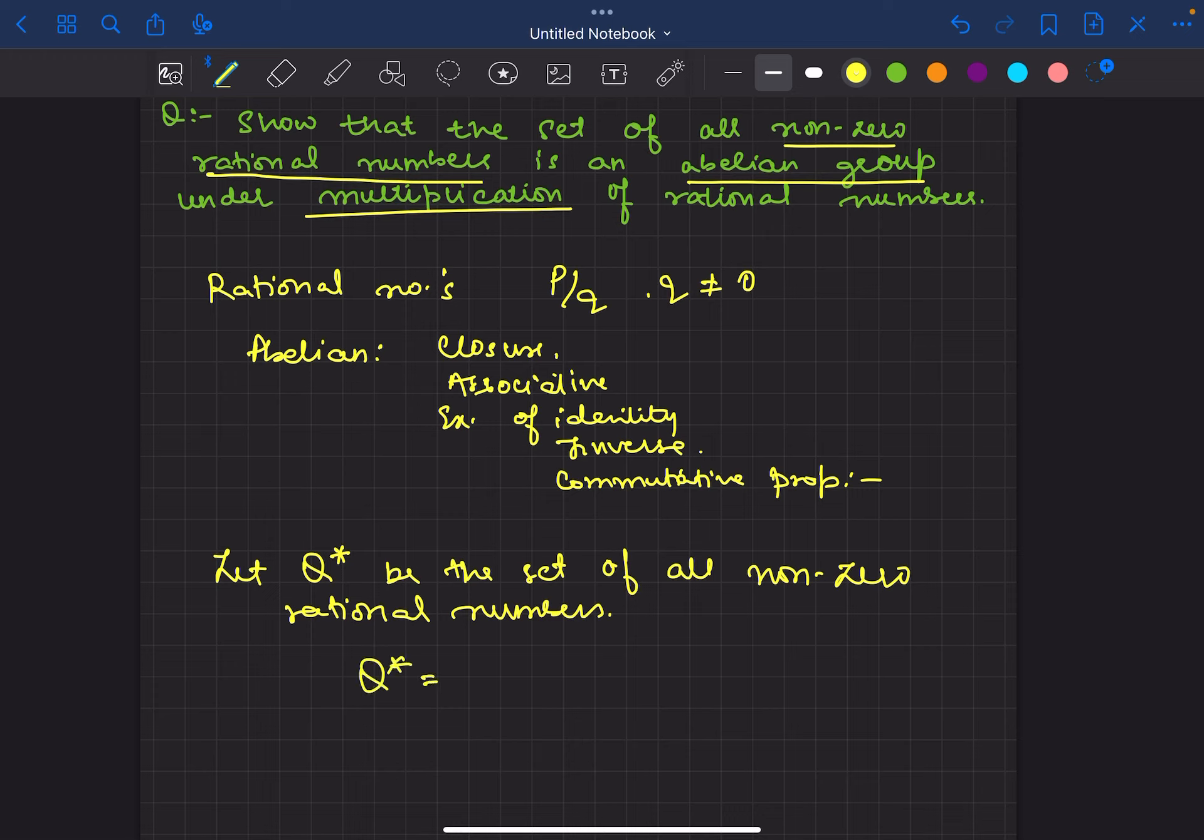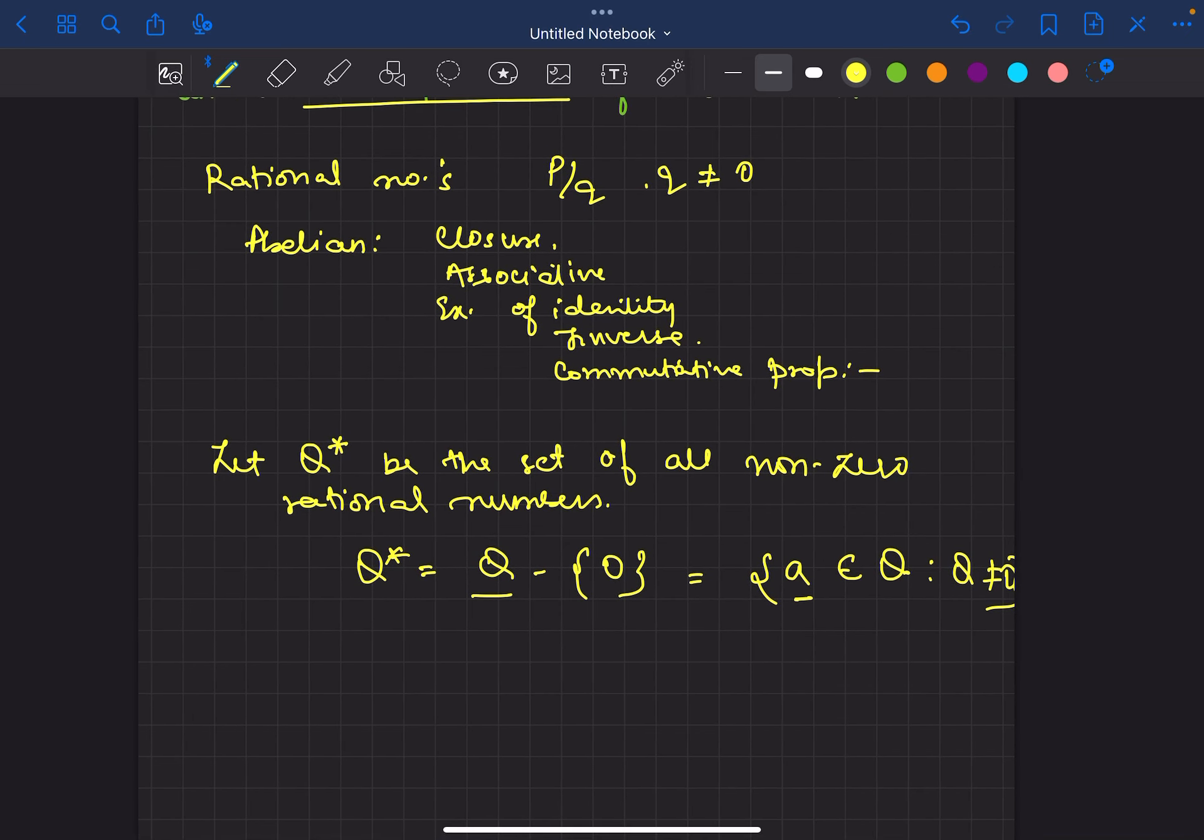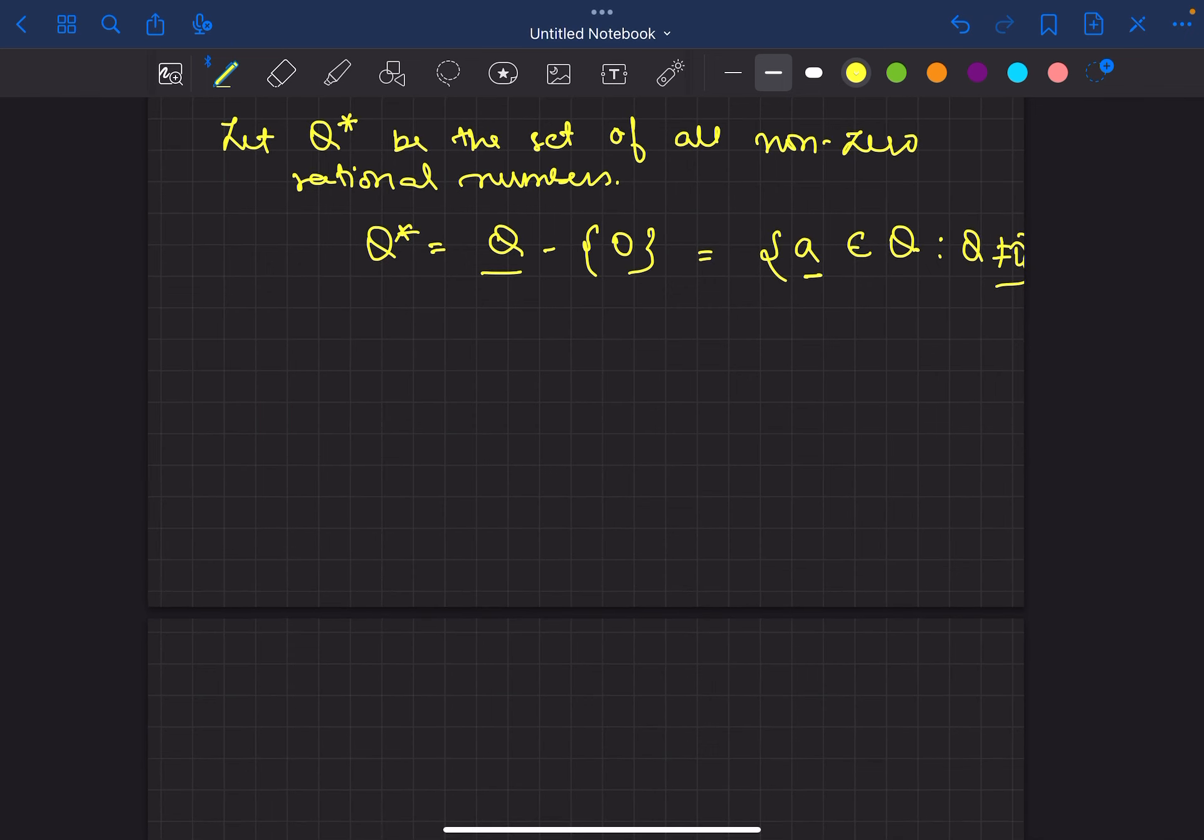So this is the set that is equal to Q, which is rational numbers, minus 0. The values of A, B, C, D will belong to Q, but Q is not 0. Let's move on with that.